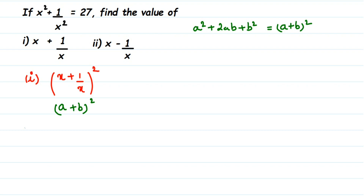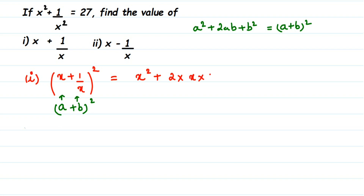In place of a we put x, and in place of b we put 1/x. So substituting into the identity: a² becomes x², 2ab becomes 2 × x × (1/x), and b² becomes (1/x)². The 2 and the x in the numerator and denominator cancel, giving us x² + 2 + (1/x)².